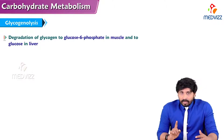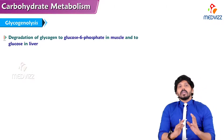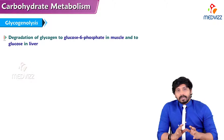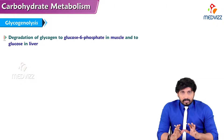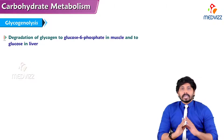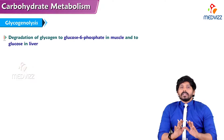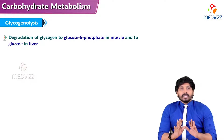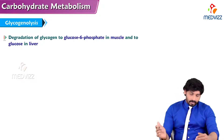As we discussed in our previous videos, glycogen synthesis takes place in liver as well as in skeletal muscles. This glycogen breakdown will also be taking place mainly in liver and to some extent in muscles.